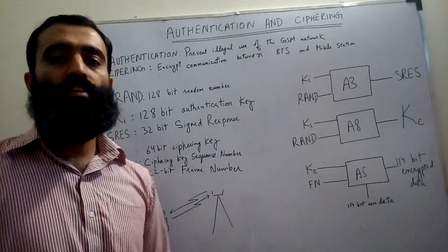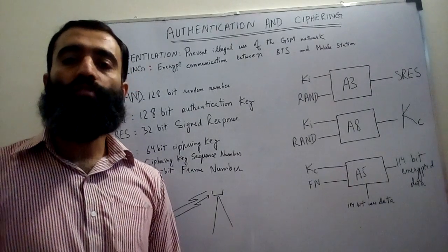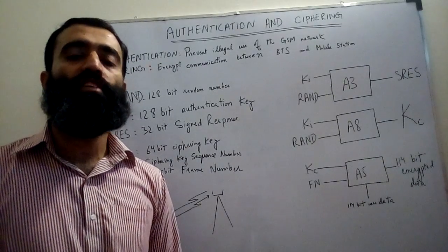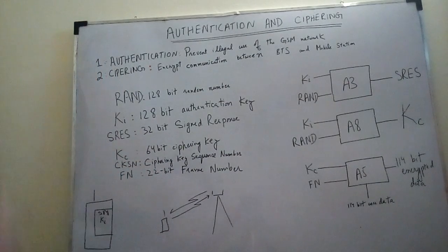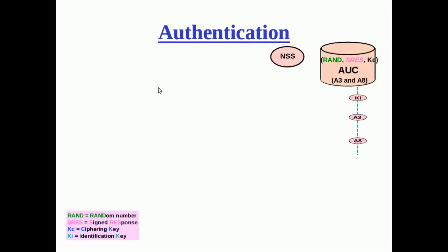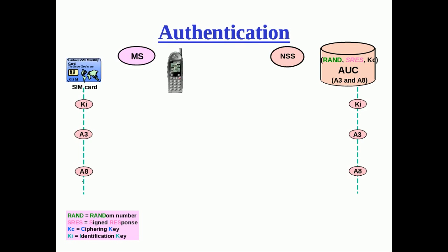Now in the second part of this lecture, we go and see how these procedures are carried out in the network and what entities are involved. The authentication center in the core network NSS plays a very vital role in the authentication procedure, because it uses the random number RAND to generate the security triplet — meaning it generates the SRES and the ciphering key KC.